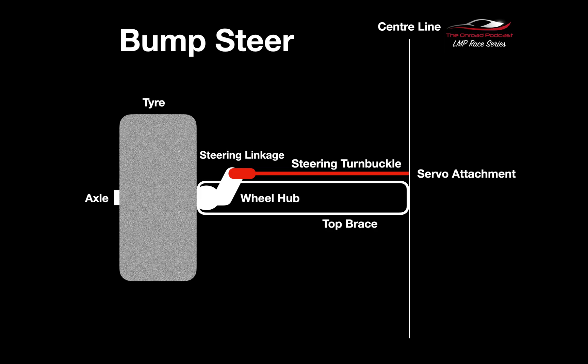What we're looking at on the screen here is from above the front wheel of a toy car. Obviously on the left hand side you've got the wheel, the tire, the axle. You've got the center line, you've got the wheel hub.